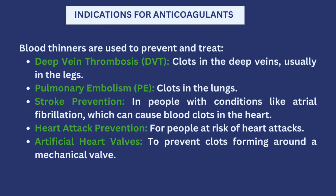There are different reasons why a patient would have to be on anticoagulants. Some of these reasons include deep vein thrombosis, which is when there are clots in the deep veins, usually in the legs; pulmonary embolism, which is clots in the lungs; and stroke prevention — for example, people who have atrial fibrillation may have blood clots in the heart and are usually placed on blood thinners.